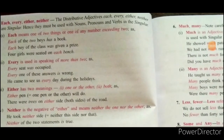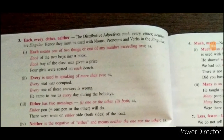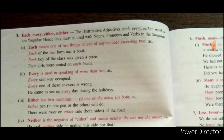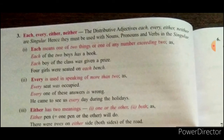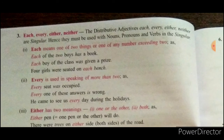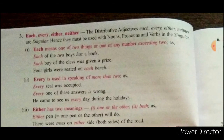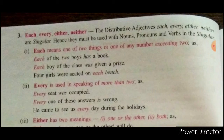Now we have each, every, either, neither — these are distributive adjectives. They must be used with nouns, pronouns, and verbs in the singular. Each means one of two things, or one of any number exceeding two. For example: 'Each boy of the class,' 'Each of the two boys,' 'Four girls were seated on each bench' — we are distributing.